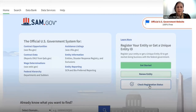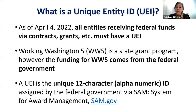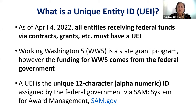You will sign into www.sam.gov and start with this process. What is a unique entity ID? As of April 4th, 2022, all entities receiving federal funds via grants or contracts must have a unique entity ID. Working Washington 5 is a state grant program; however, the funds originated from the federal government, so Working Washington 5 is requiring the UEI as part of the application process.